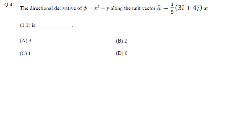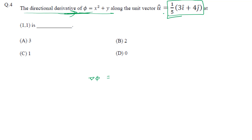Next: the directional derivative of phi = x² + y along the unit vector u = (1/5)(3i + 4j). This is a unit vector since its magnitude equals 1. To find the directional derivative, we first find the gradient, then take the dot product with this unit vector. The gradient is the partial derivative with respect to x times i, plus the partial derivative with respect to y times j.